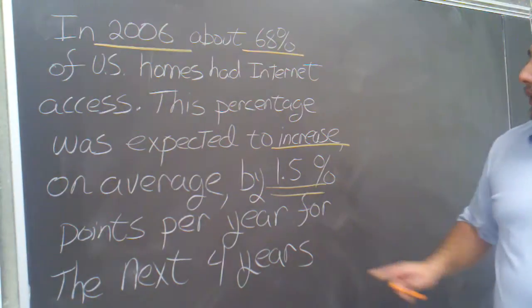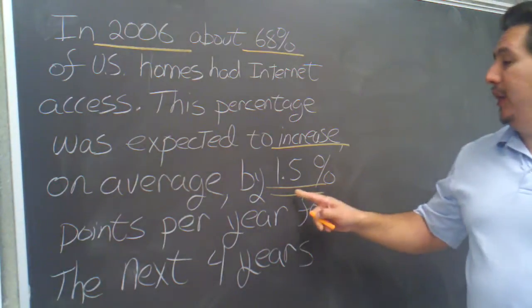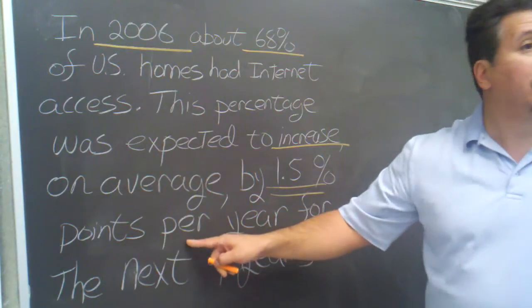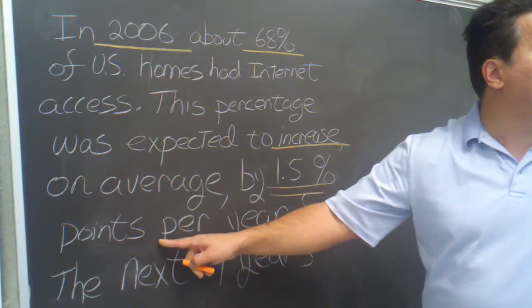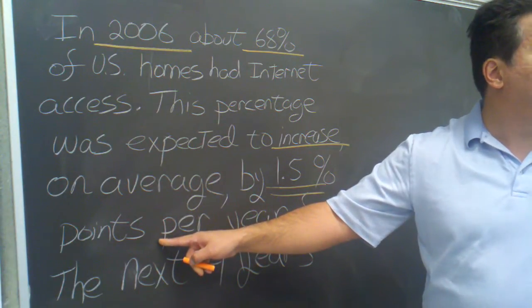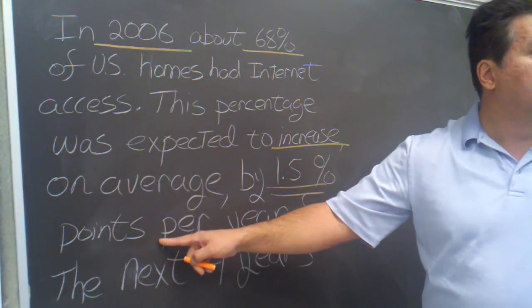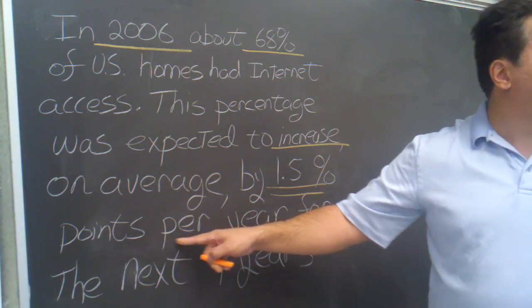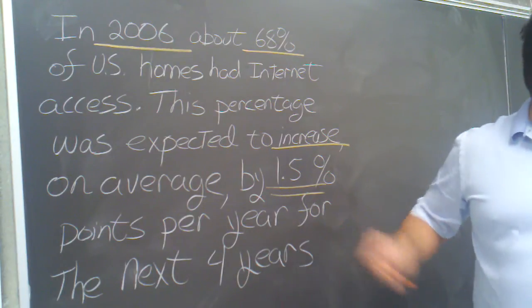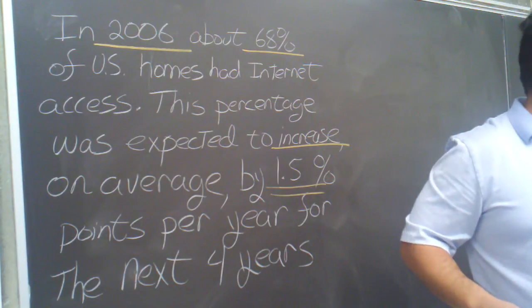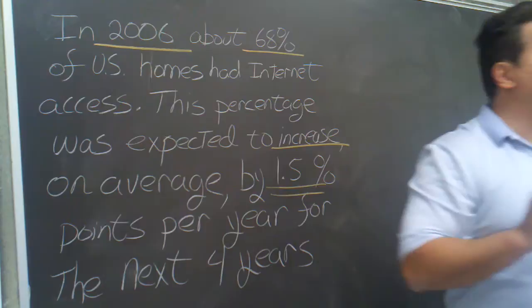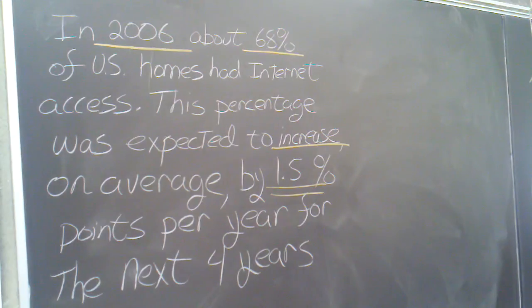When I read this, it's changing by 1.5 percentage points — which means that has to be my output, percentage points — per unit of input, which is going to be in years. So this is how I'm determining what is the potential output and what is the potential input.